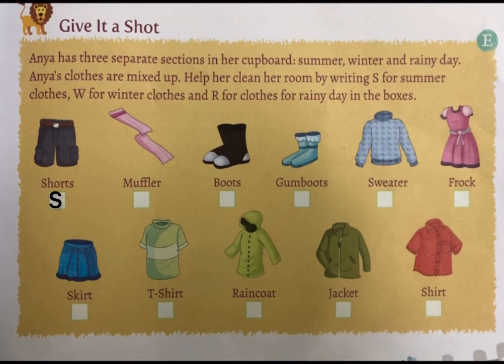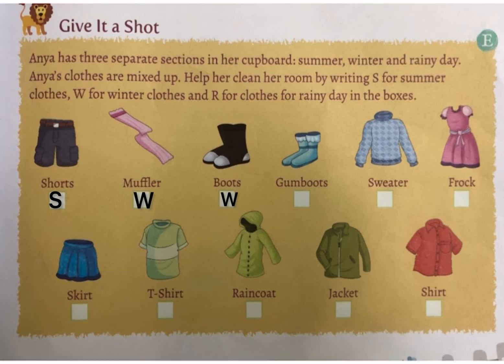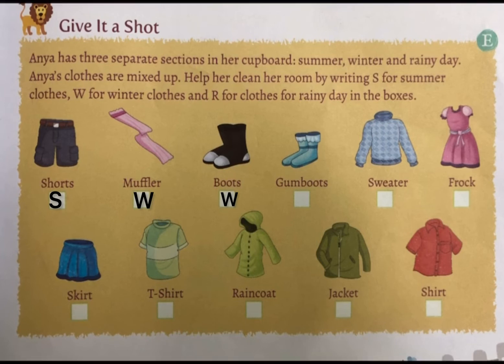Next is muffler — we wear muffler in the winter season, so write W in the box. Then comes boots — we wear boots in the winter season, so write W in the box. Next comes gum boots — we wear gum boots on a rainy day, so write R in the box.